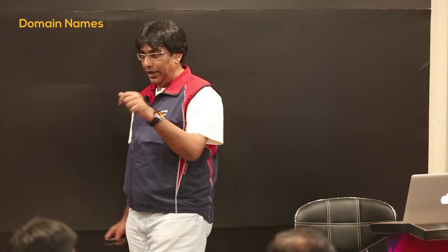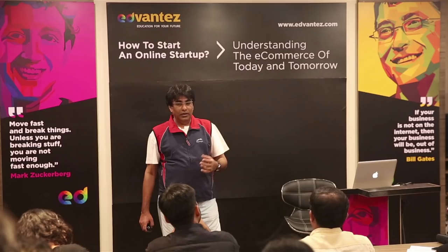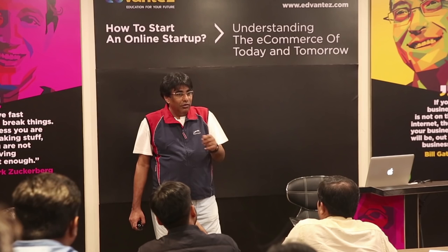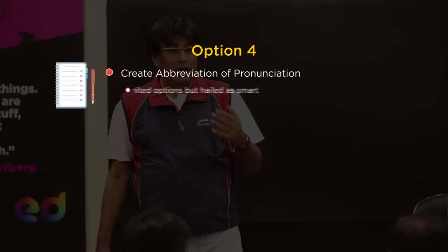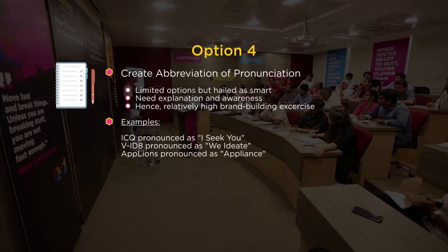Coming back: option four is to create an abbreviation out of pronunciation. For example, read the letters I-C-Q — it reads like 'I seek you.' So from the pronunciation of those letters, they are trying to create a name.